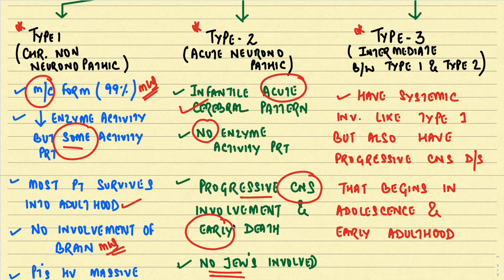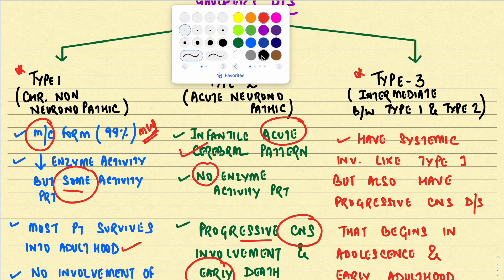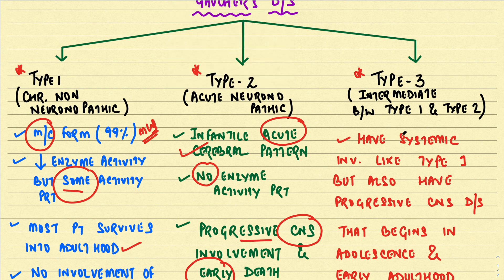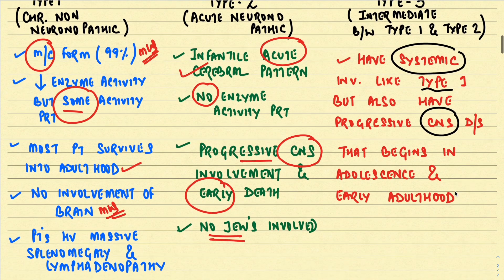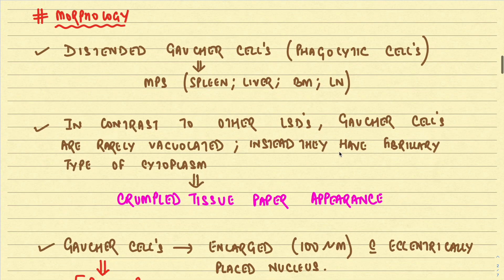Type 3 Gaucher's disease is intermediate between Type 1 and Type 2. These patients have all the systemic features of Type 1 but also have progressive CNS disease that begins in early adolescence and extends into early adulthood.